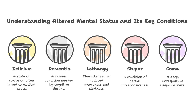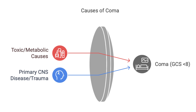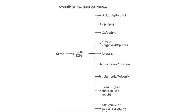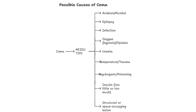There's a spectrum of altered consciousness. The source focuses on coma, which is defined as a GCS score of less than 8. There's a really helpful mnemonic, AEIOU TIPS, for remembering possible causes of coma.